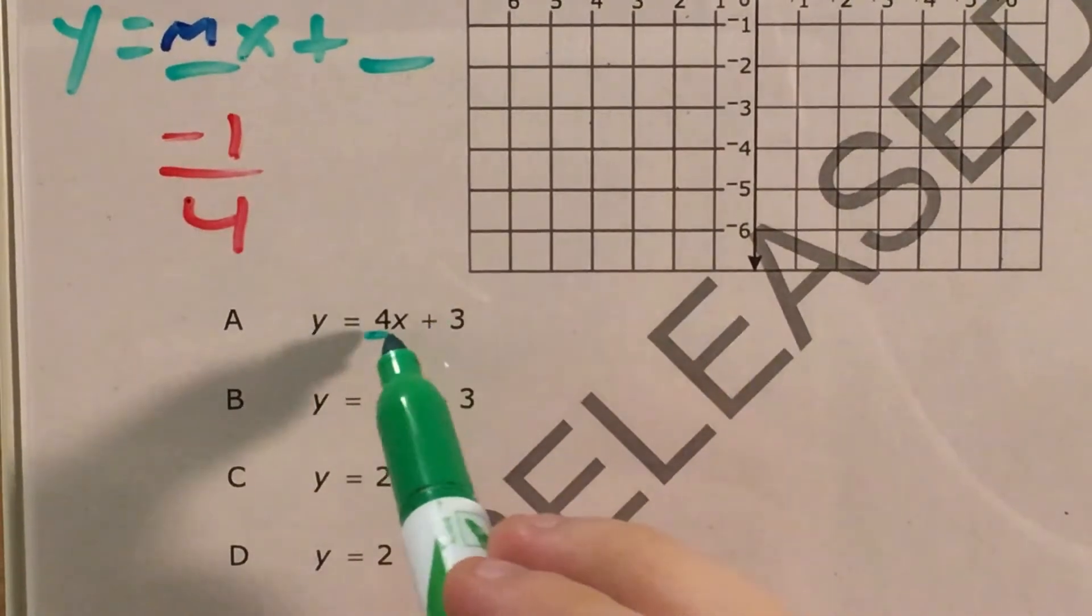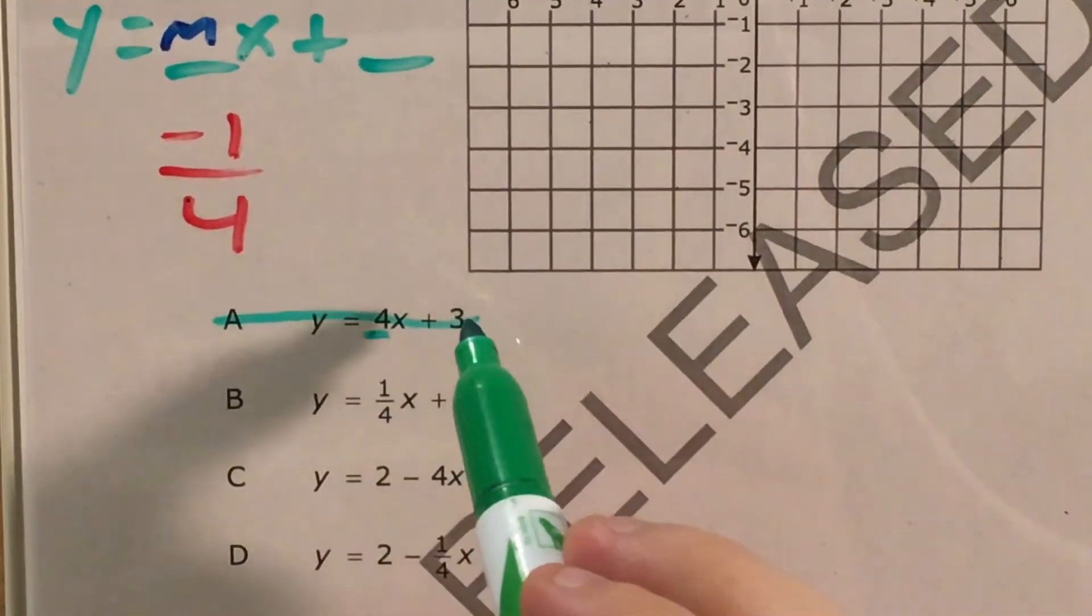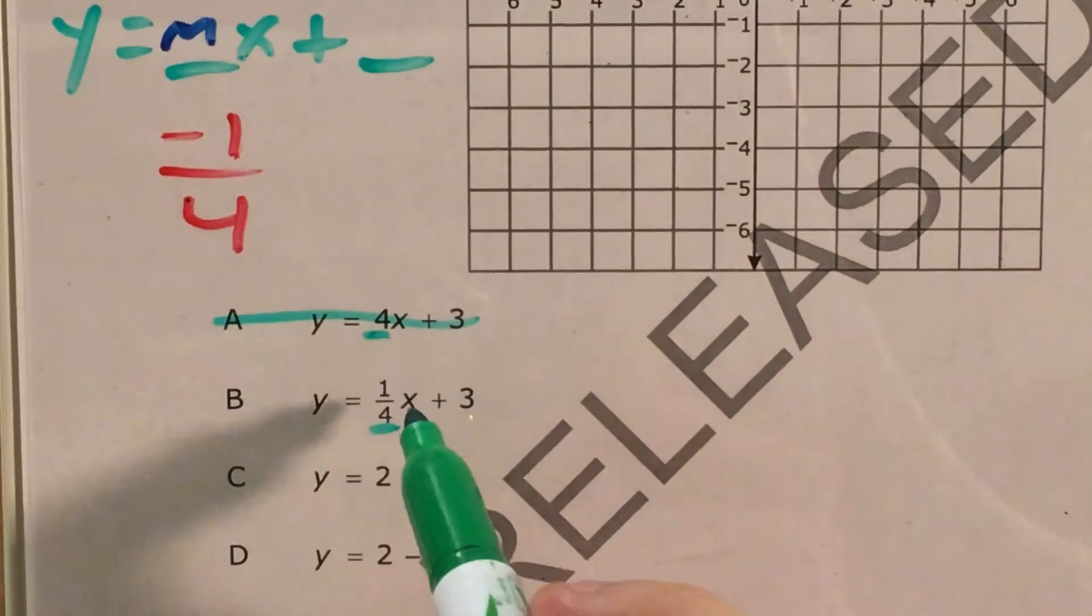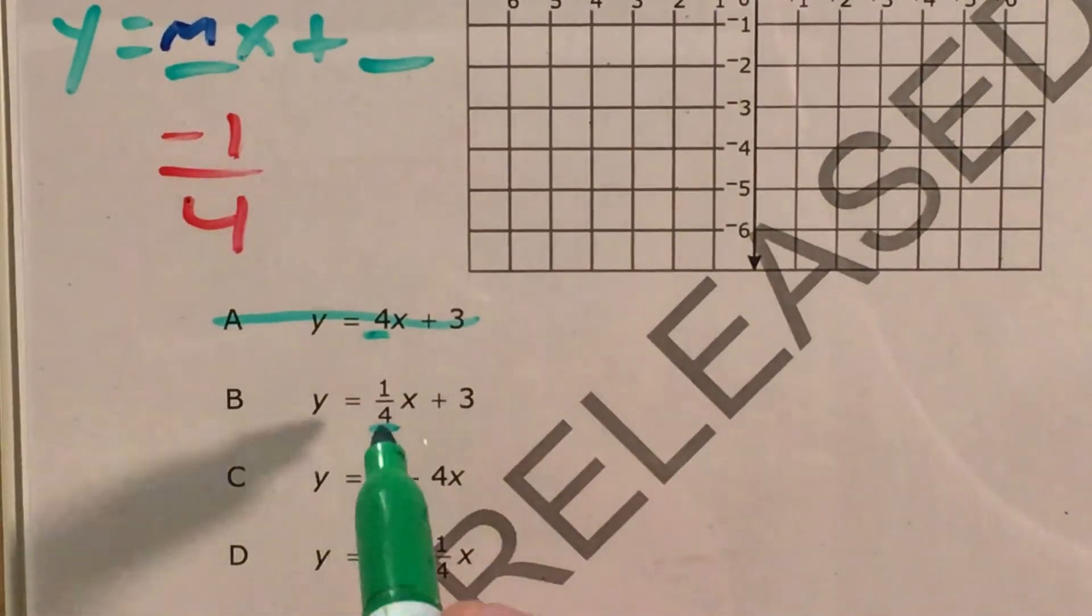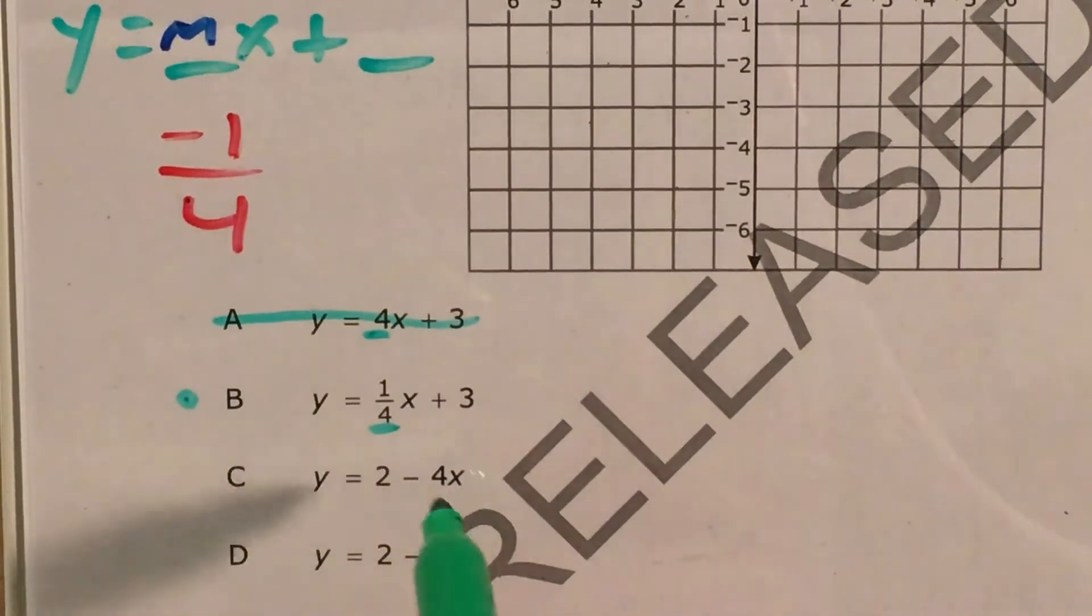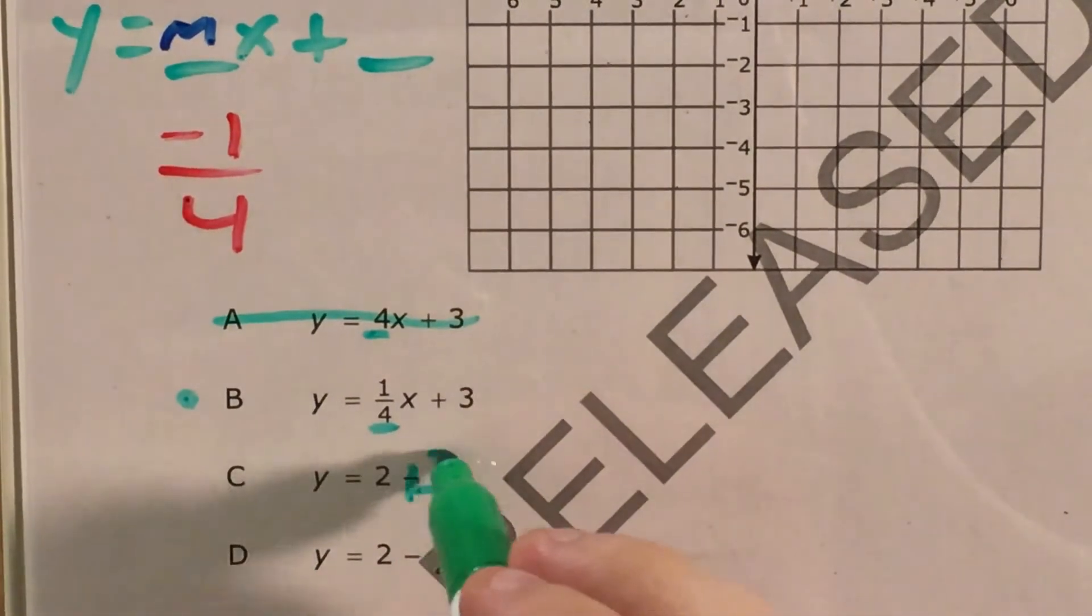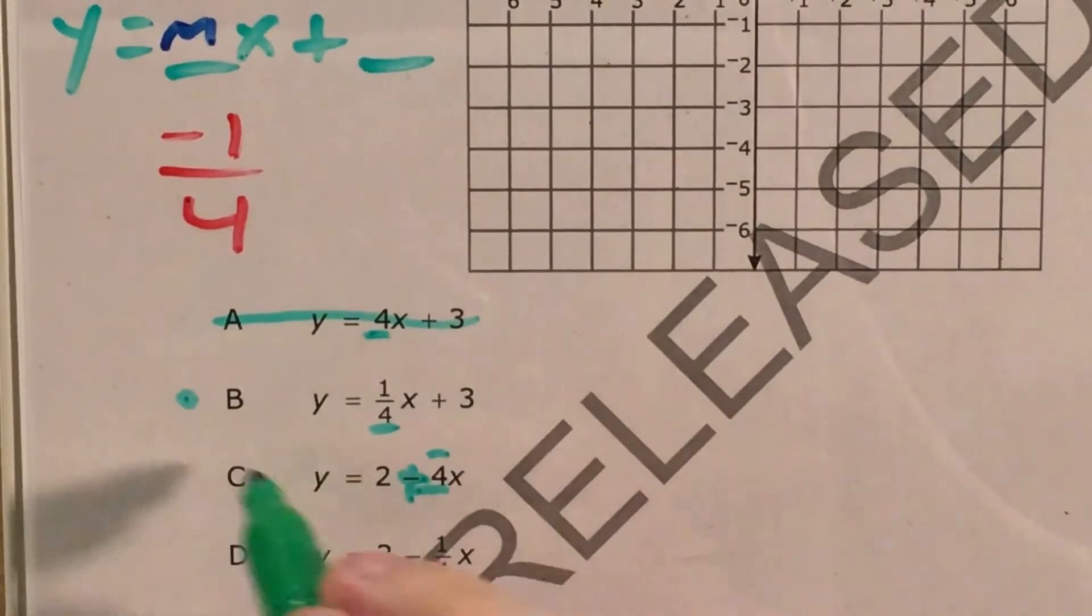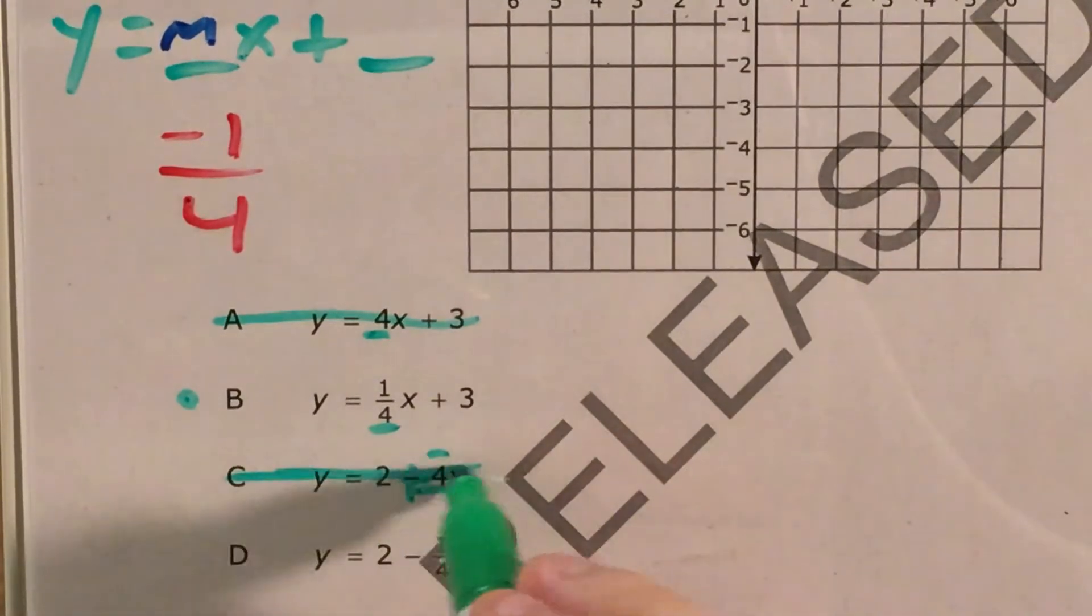And I'm just looking for a number attached to x. So for choice A I see that four is attached to x. That's not what we're looking for. I see that one fourth is attached to x. Okay this is negative one fourth. So this could be right. I'll put a dot by it. I look at choice C and I see minus four. That's another way of saying that my slope is negative four because we can think of this as plus negative four. But either way it's not the negative one fourth that I'm looking for. And I look at choice D.